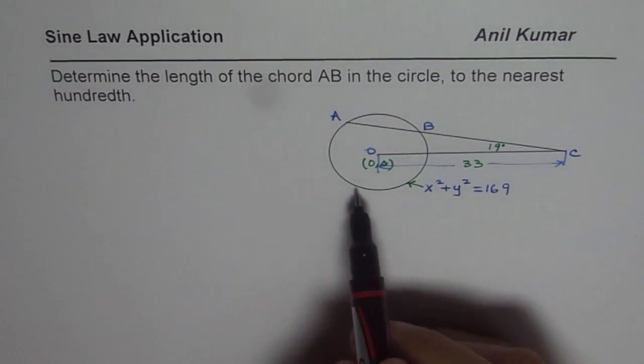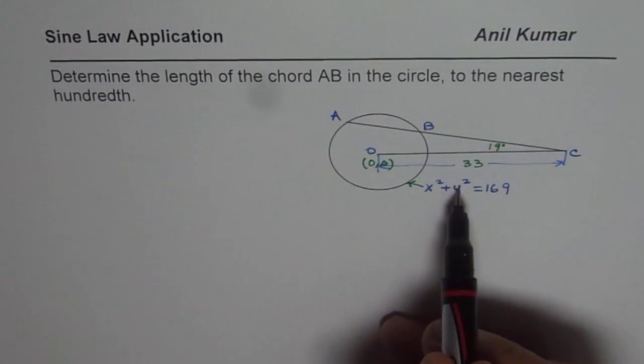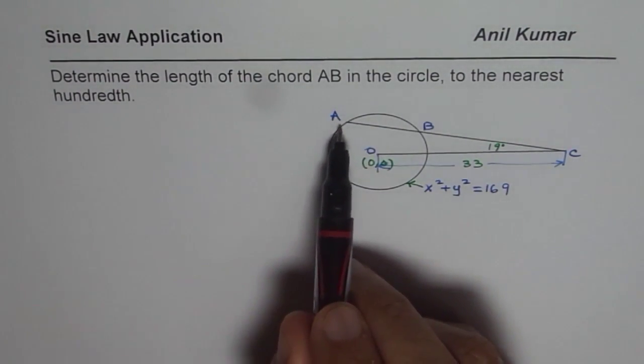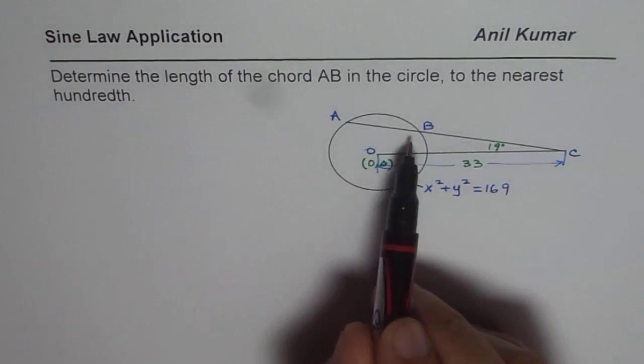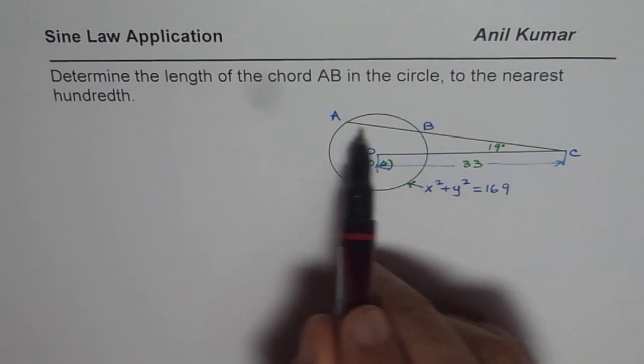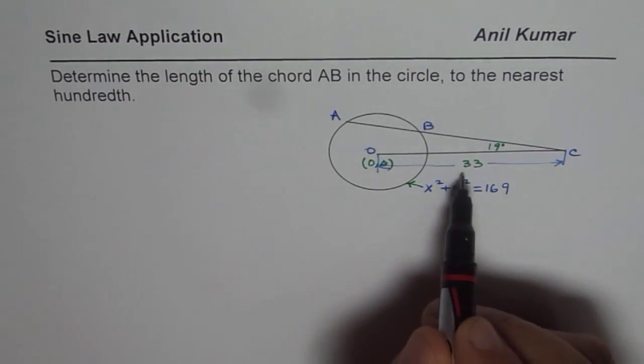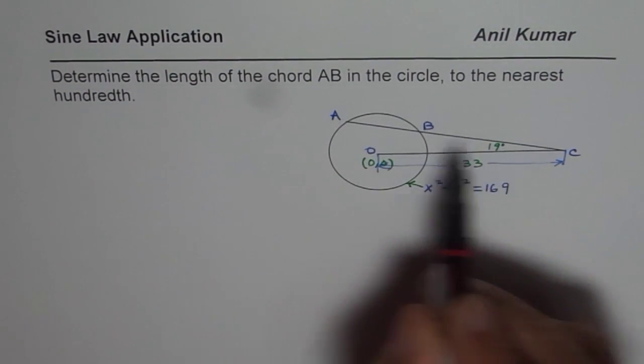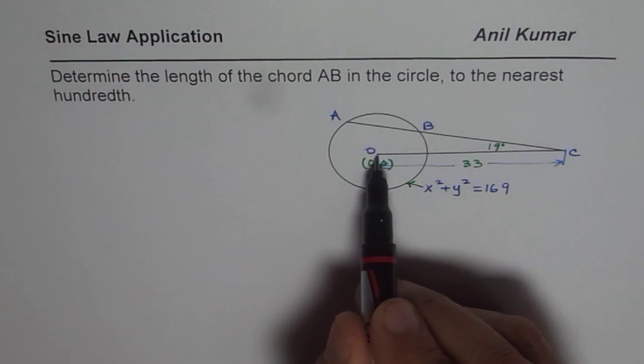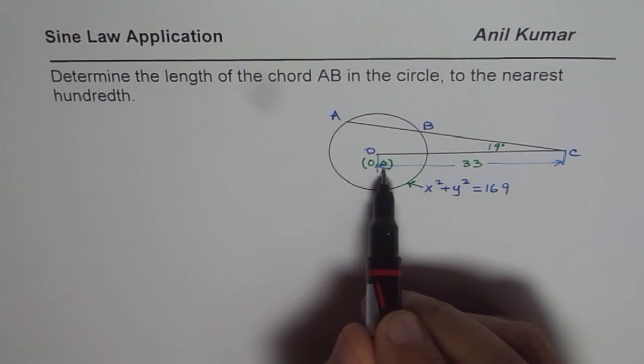Here we have a circle whose equation is x square plus y square equals to 169. Segment AC goes through the circle and AB is the chord which we need to find the length of. From center O to C, the distance is 33. The angle it makes with A is 19 degrees, and coordinates of point O is the center of the circle at origin.